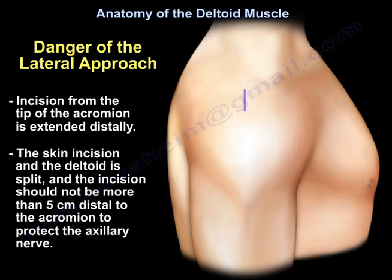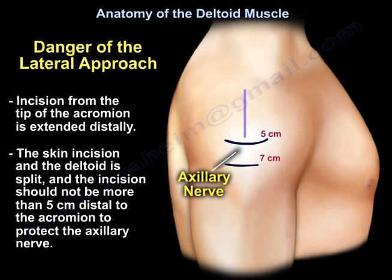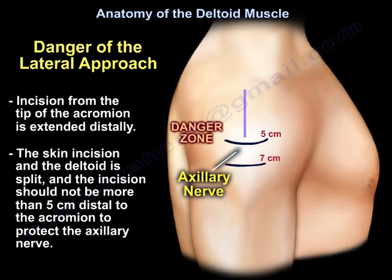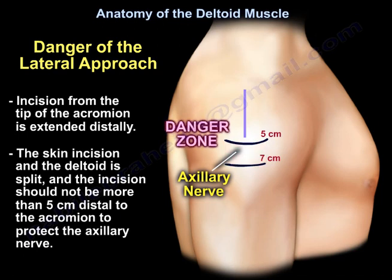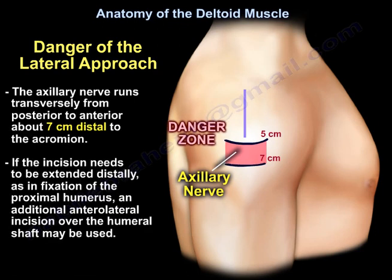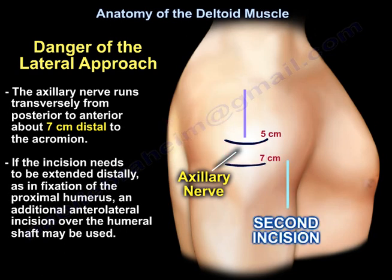Regarding the danger of the lateral approach: an incision from the tip of the acromion is extended distally, the skin and the deltoid are split, and the incision should not be more than 5 cm distal to the acromion to protect the axillary nerve, which runs transversely from posteriorly to anteriorly about 7 cm distal to the acromion. If the incision needs to be extended distally, as in fixation of the proximal humerus, an additional lateral incision over the humeral shaft may be used, as shown in the diagram.